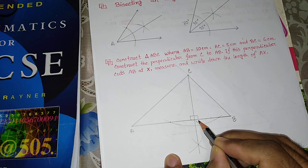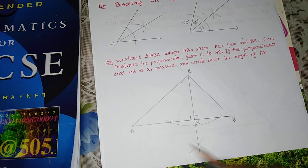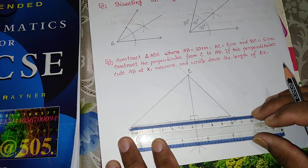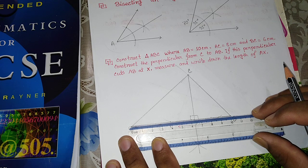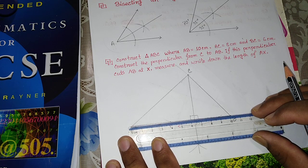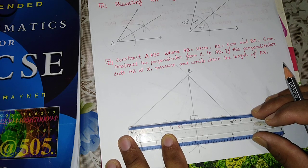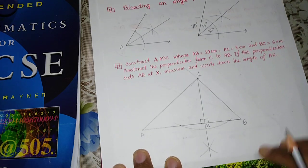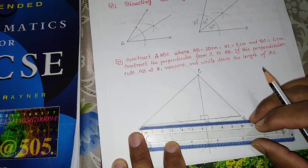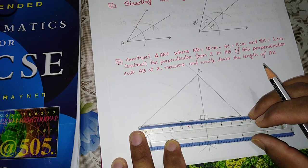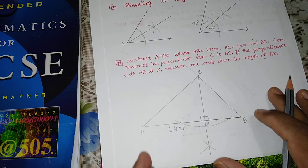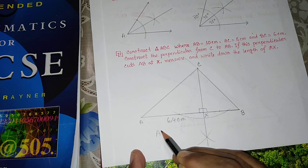The intersection point is X. Now I will measure it. It is exactly between 6.3 and 6.4, so we can take it as 6.4 centimeter. That means AX equal to 6.4 centimeter.